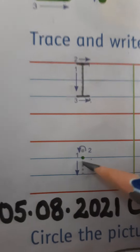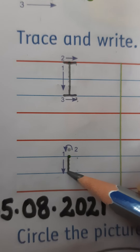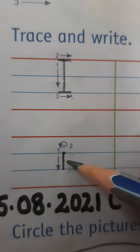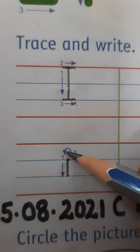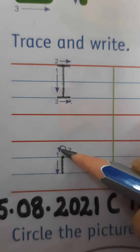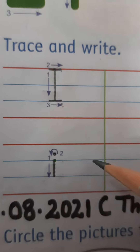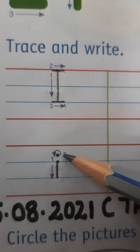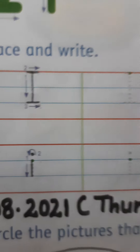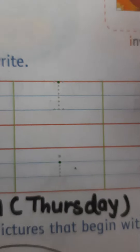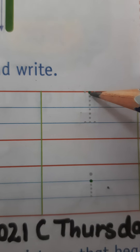Blue line ke beech mein ham log ek chhoti si standing line banayenge — means khadi rekha banayenge. Aur upar ham ek dot lagayenge. Chhoti si bindi lagayenge — badi wali bindi nahi banani hai, sirf chhoti si bindi banani hai. Thik hai? Chhoti dot lagani hai. Now let's do the tracing part once again.